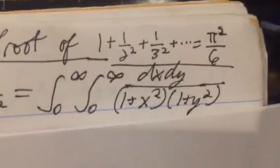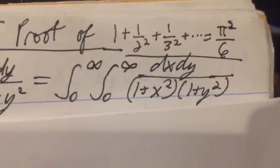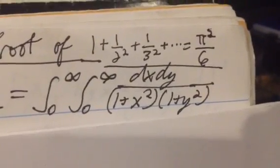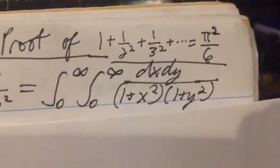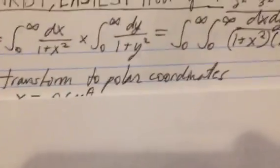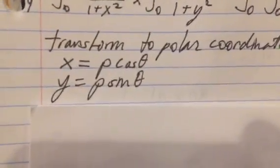So you're going to have a double integral, we multiply those together, and you're going to have it with dx and times dy. And then we're going to transform to polar coordinates, so x equals rho times cosine theta, y equals rho times sine theta.